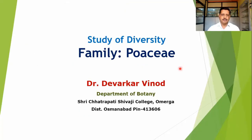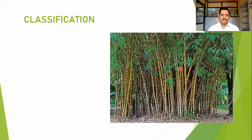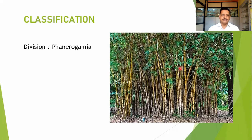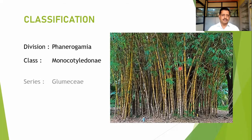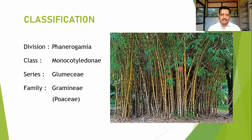The Poaceae family is one of the largest plant families. It belongs to the division Phanerogamia, class Monocotyledoniae, series Glumaceae, and family Gramineae. Timothy and Hooker mentioned the Gramineae family, which today we know as Poaceae.